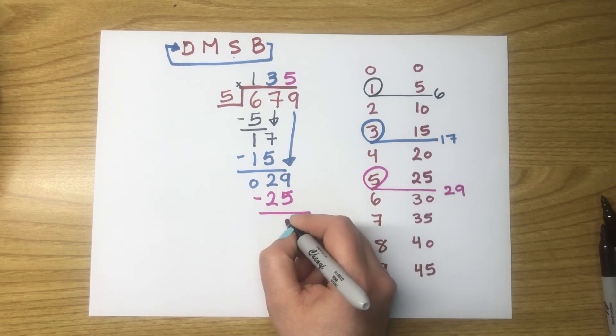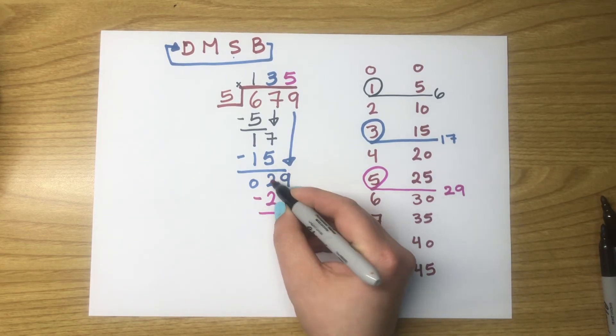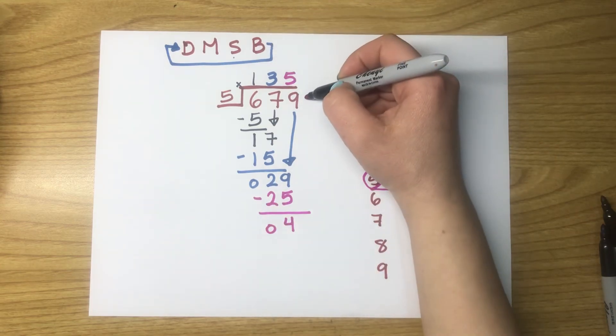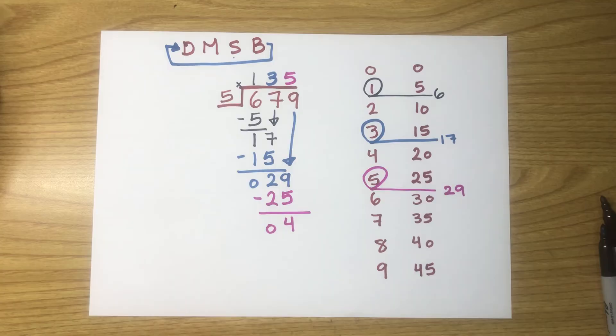Now, it's time to subtract. 9 take away 5 equals 4. 2 take away 2 equals 0. Bringing down. There is no other digits left. So, we are done.